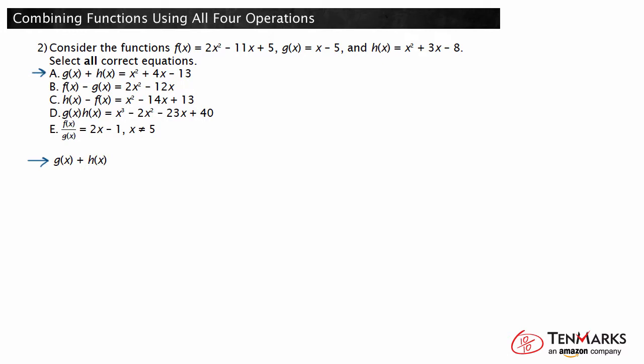We'll start with the first equation. Let's determine g of x plus h of x and see if it matches what is given. Substituting the given expression in for g of x and h of x results in x minus 5 plus x squared plus 3x minus 8. Now we need to combine like terms. x squared cannot be combined with any other term. x plus 3x is 4x, and negative 5 plus negative 8 is negative 13. So, g of x plus h of x is x squared plus 4x minus 13. This matches what is given in the answer choice.